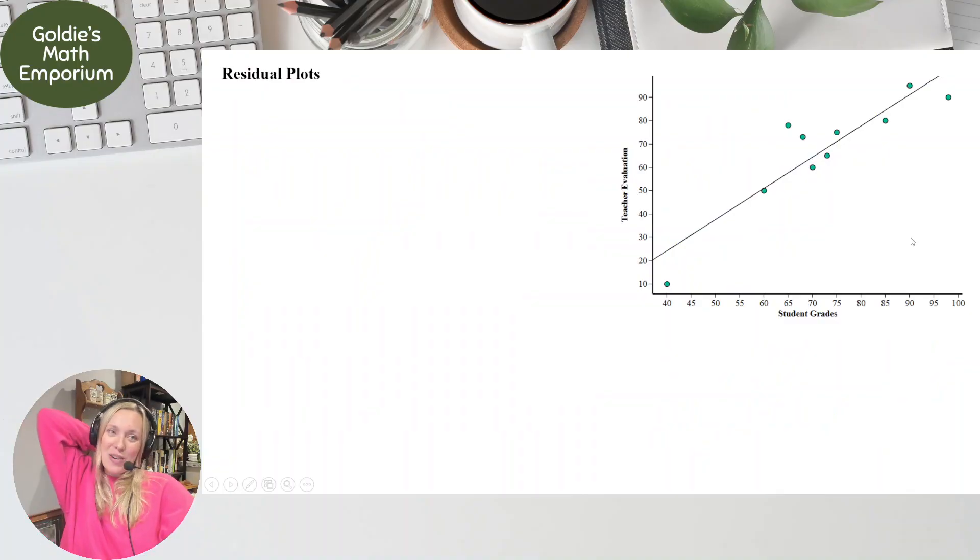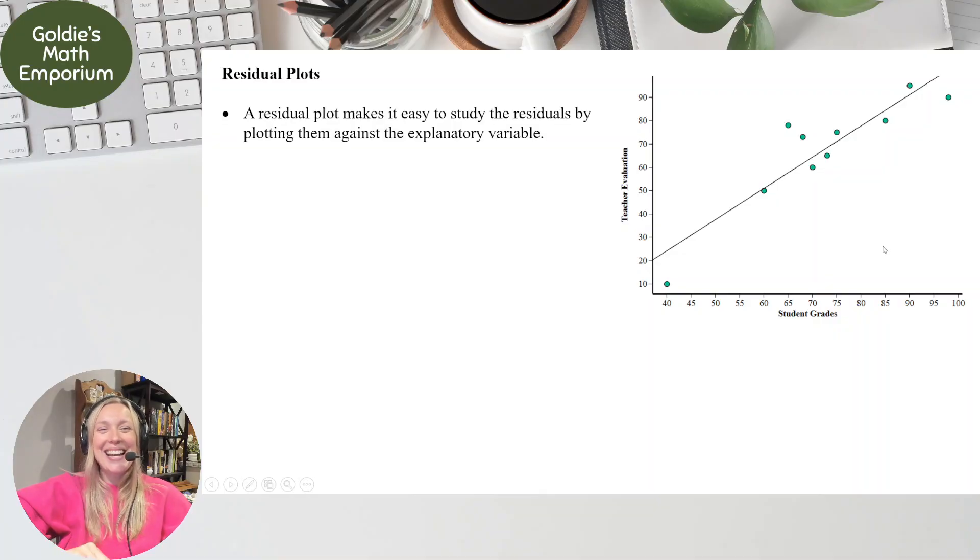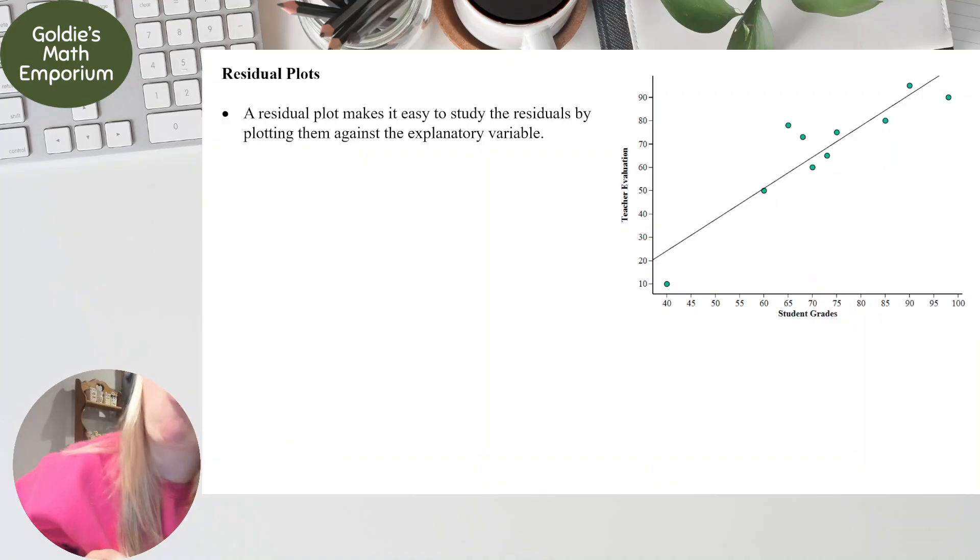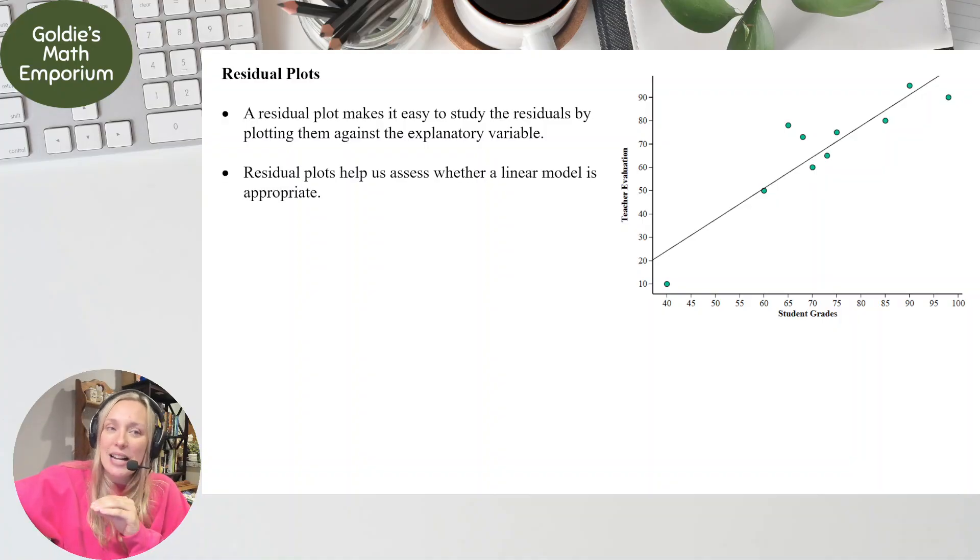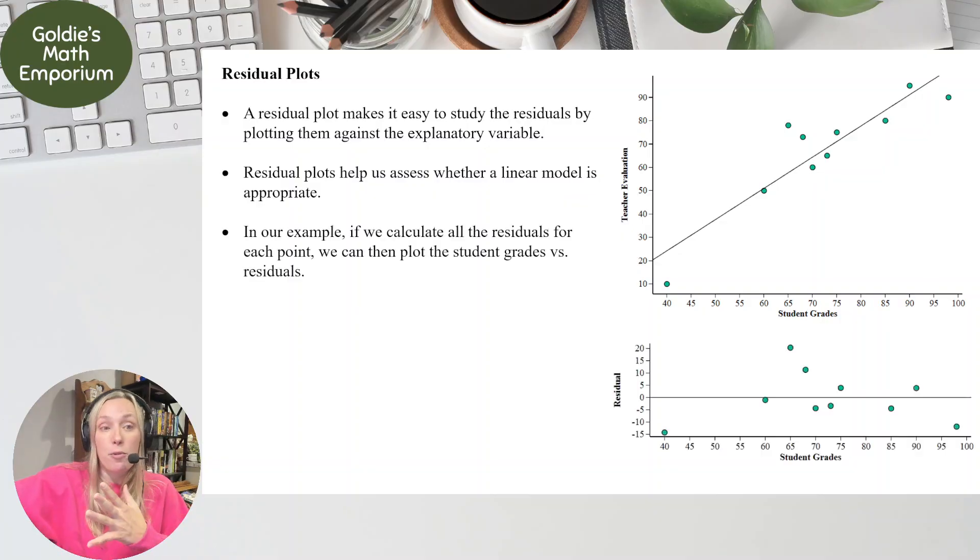The next thing is residual plots. So now that we know residuals are, and we can find them and interpret them, now we can plot them. Because why wouldn't we want to do that? It sounds like a good time. A residual plot, the reason we have it, it makes it easy to study all of the residuals at once by plotting them against the explanatory variable. So a residual plot finds every residual and plots it against the x values. And it helps us assess whether a linear model for the data is going to be appropriate or not.